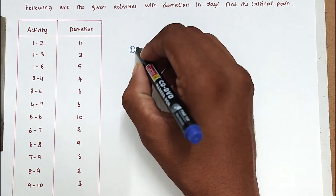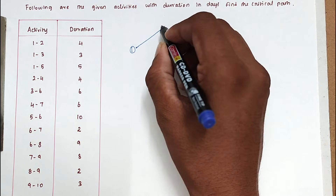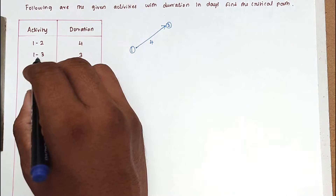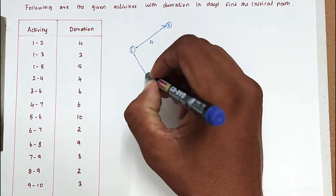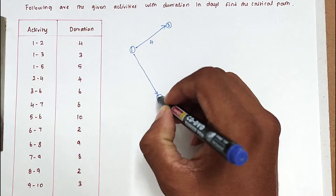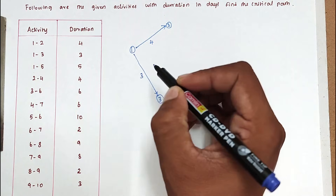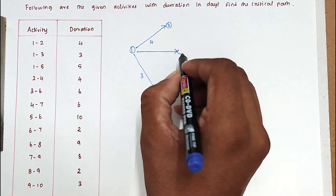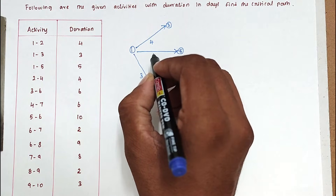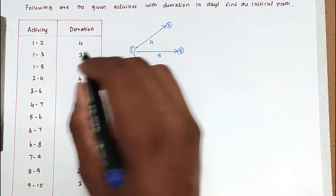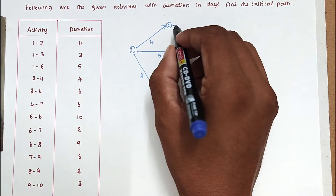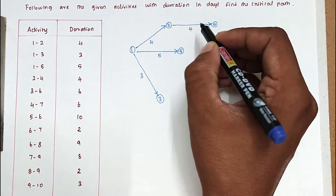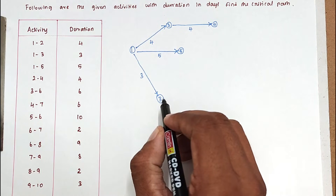Starting the network diagram: activity 1-2 has duration 4. Next, activity 1-3 has duration 3. Then activity 1-5 has duration 5. Next, activity 2-4 has duration 4 as well.